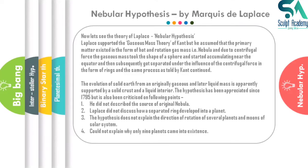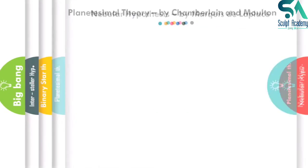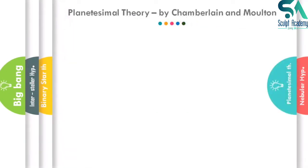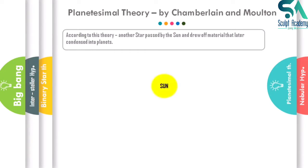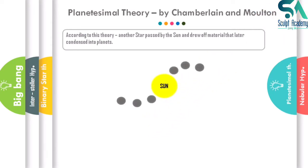The Nebular Hypothesis of Laplace thus fails on several points. Moving on to the next theory — the Planetesimal Theory by Campbell and Moulton. In this theory, another star passed by the sun and drew off material from it, and this material later condensed into planets. So the sun was already present, a third star came close, drew off solar material, and this material condensed into planets, as shown in the animation.